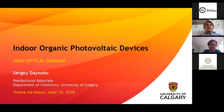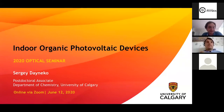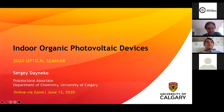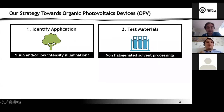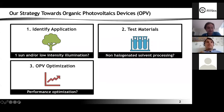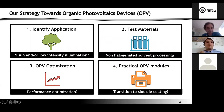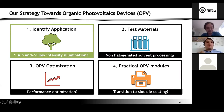Hi everyone. Today I would like to present indoor organic photovoltaic devices. I want to talk about our strategy — how we design and improve performance and achieve our goals in the lab. Our strategy follows these steps: first, identification of applications; then testing materials; OPV optimization; and finally, practical OPV models.